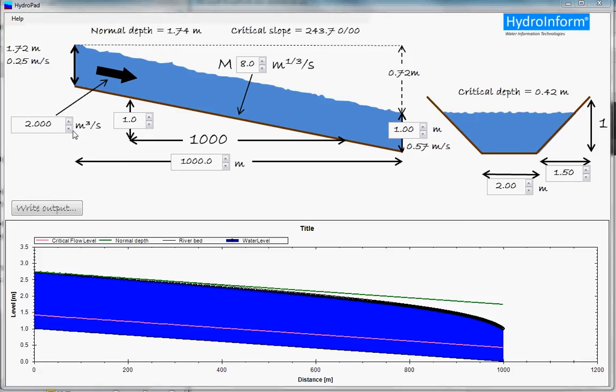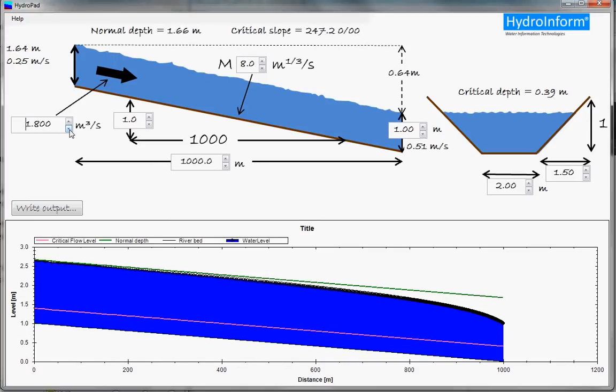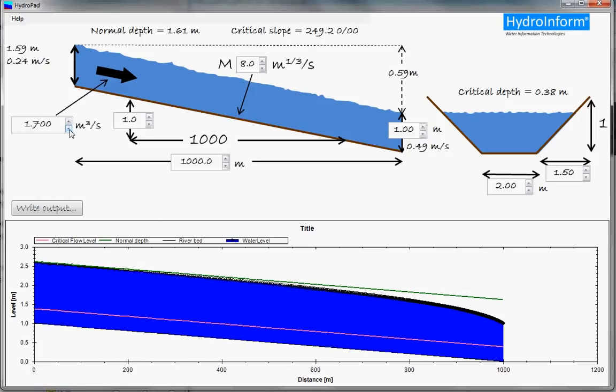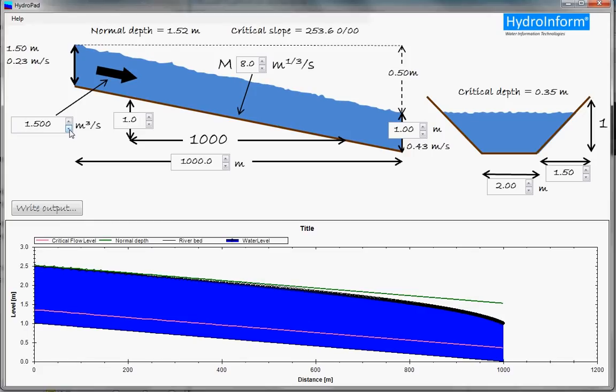So, let's try to make a smaller flow, simply by adjusting these parameters. And you can see all the parameters are immediately changed when you change the flow.